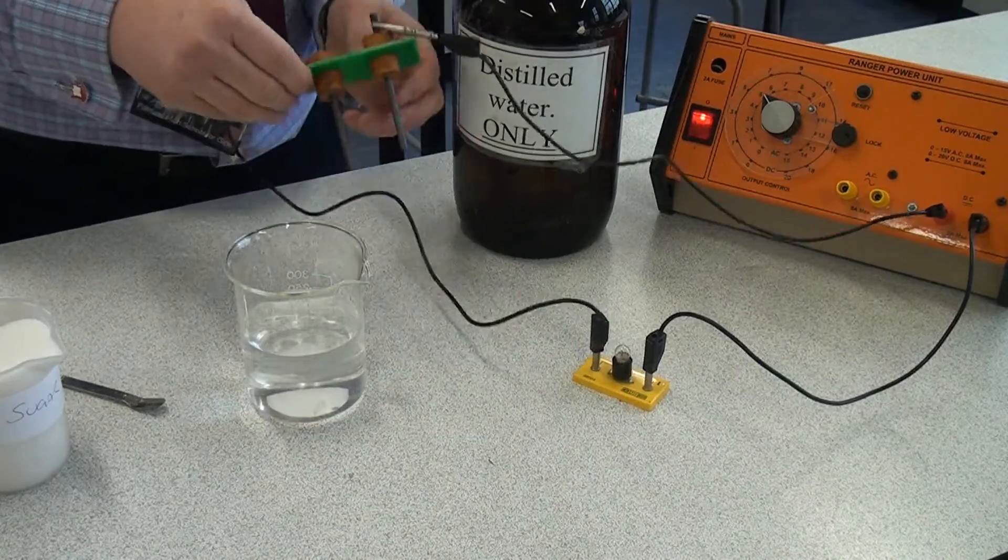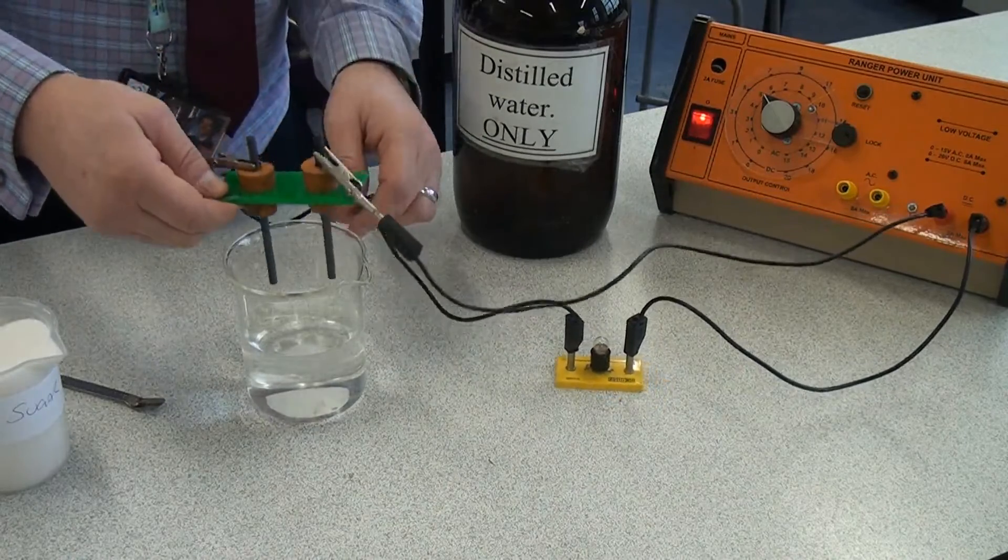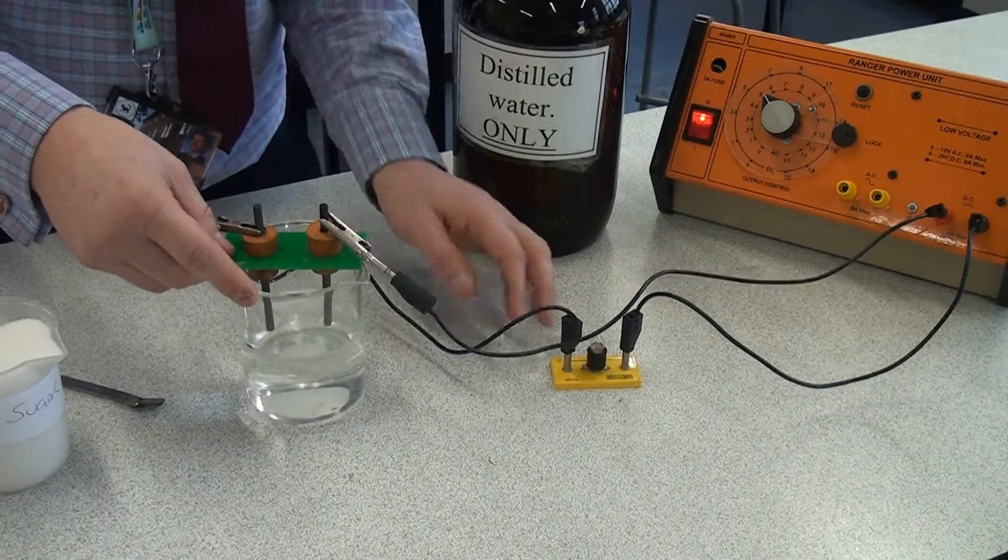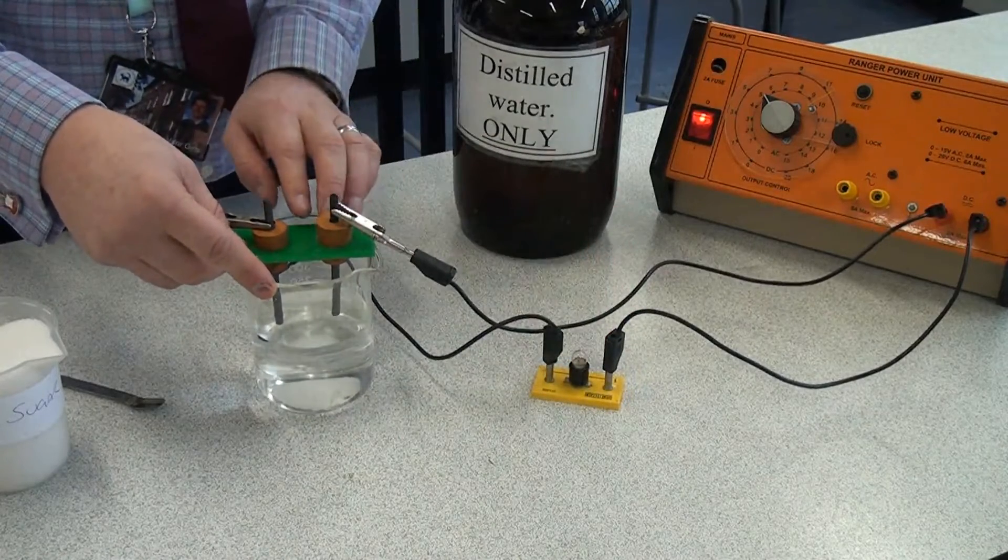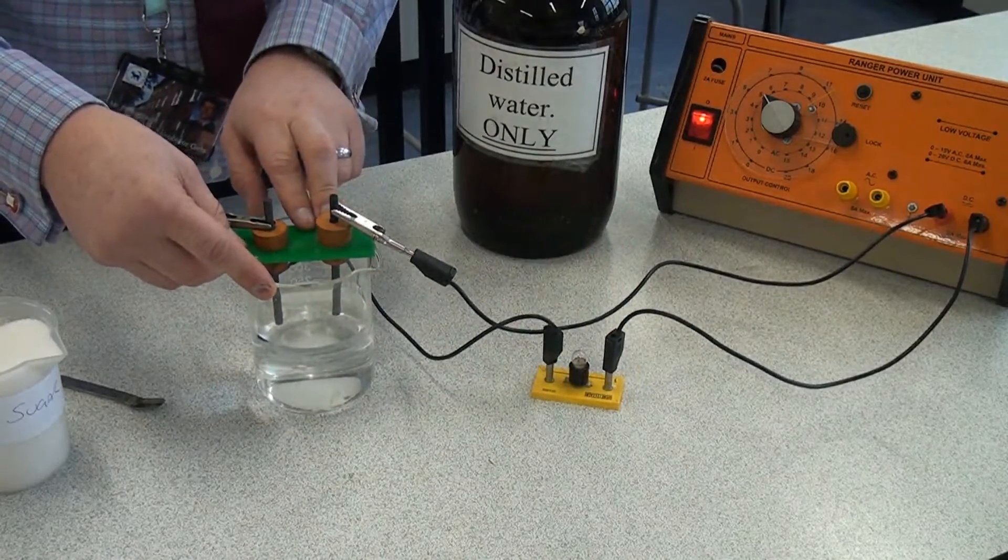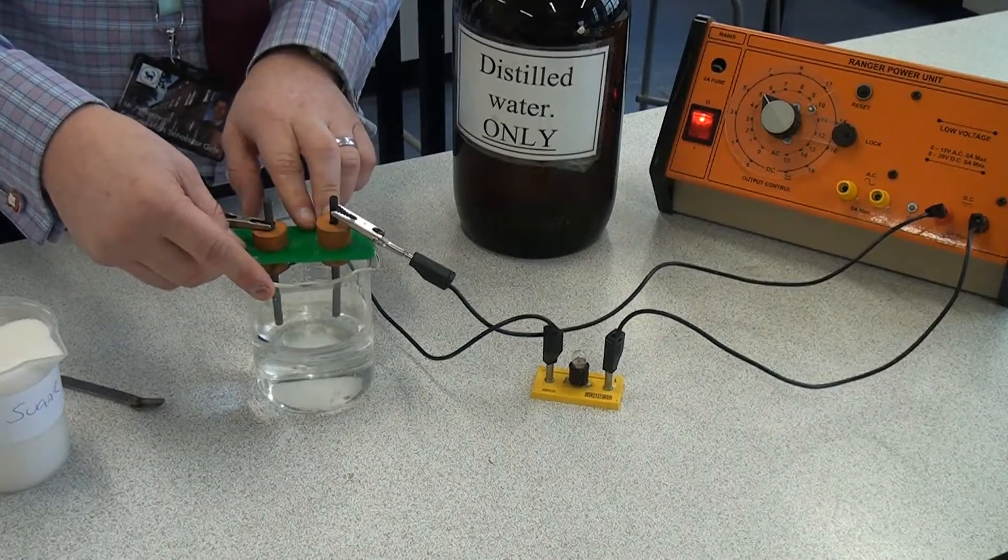So let's see if the sugar solution conducts electricity this time. And we can see the bulb still isn't lighting up. So even in solution the small covalent compounds still don't conduct electricity.